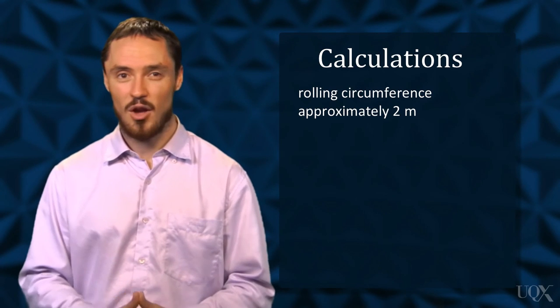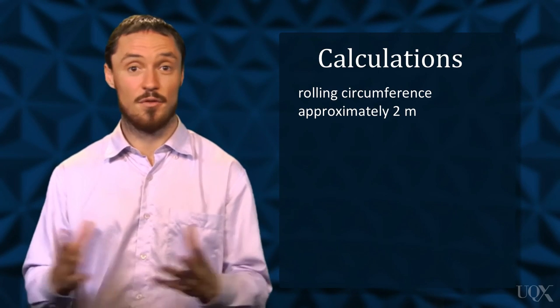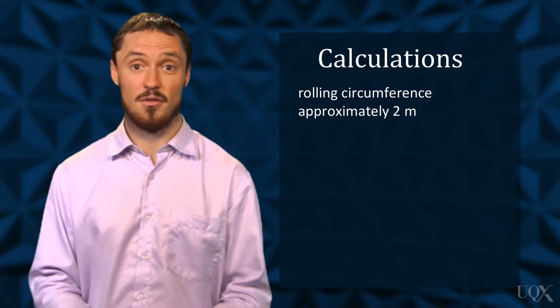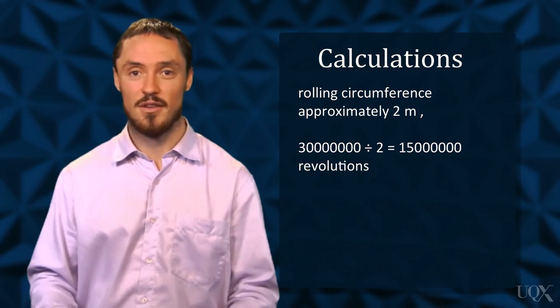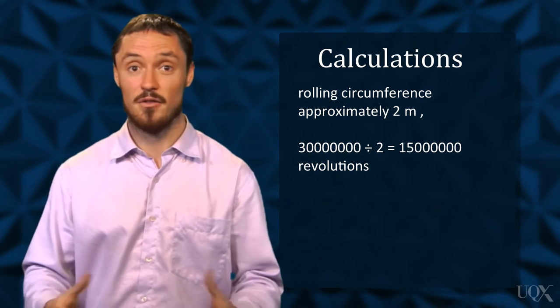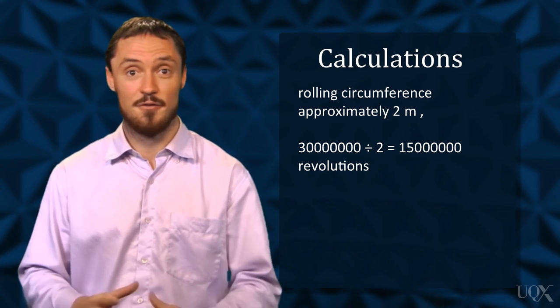Interestingly, earlier in the problem, we could round the value of the rolling circumference to 2 metres. This allows us to estimate the number of revolutions as 30 million divided by 2, giving an estimate of 15 million.